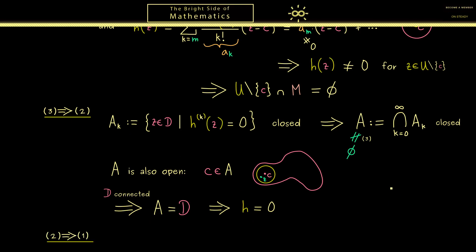Finally, the last thing we have to show is that we can also go from 2 to 1. However, this is trivially true, so there is nothing to show here. With this our circle is closed and our whole proof is finished. In summary, we have proven the identity theorem for holomorphic functions.